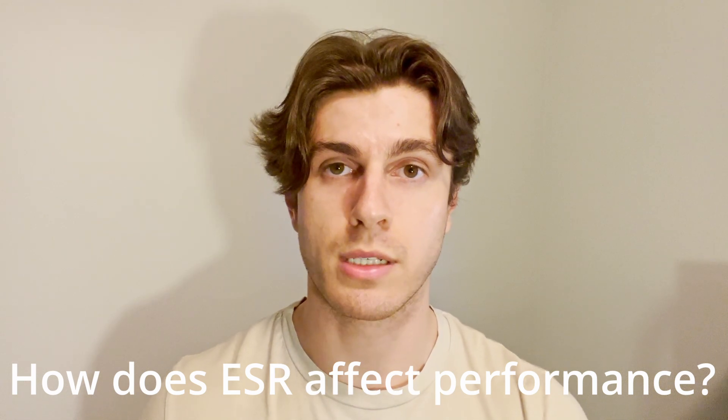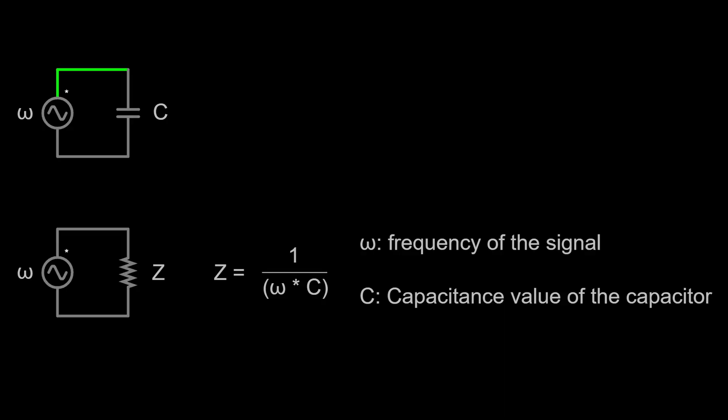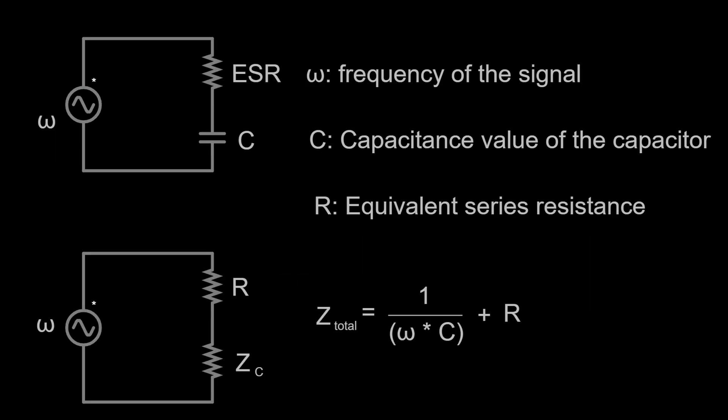So how does a capacitor's ESR affect its performance? Let's look back on the analysis of the ideal capacitor, where we modeled it as a variable resistor whose resistance was inversely proportional to the frequency of the signal. Now our model has an additional resistor in series with the variable resistor, except this resistor's value is constant across all frequencies. So if we create an equation for the total impedance of the capacitor, the term on the left comes from our variable resistor, and then we have a constant resistance value on the right. Essentially, our total impedance is just increased by some constant value. This affects the capacitor's ability to filter out high frequency noise because it no longer acts as that super low impedance pathway to ground.